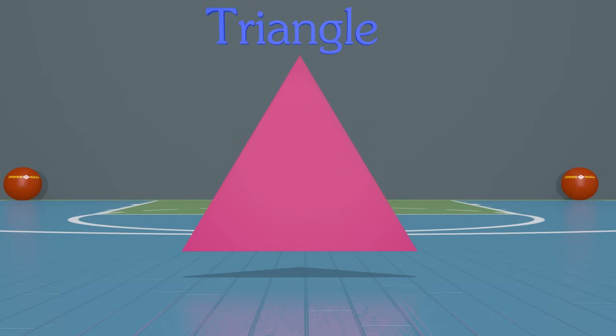Here we have a triangle, but what makes this shape a triangle? For a shape to be a triangle, it must have three sides and three angles.